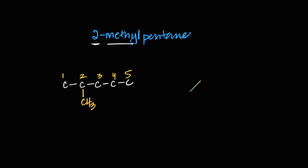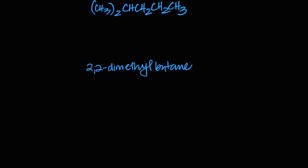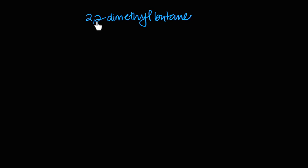For the skeletal formula of 2-methylpentane, we draw five carbons with a methyl branch on carbon two. The structural formula shows two CH3 groups on carbon number two — it's a CH because the fourth bond is an H — then CH2 for carbons three and four, and CH3 for carbon five. This gives us the structural, skeletal, and basic structure of 2-methylpentane.